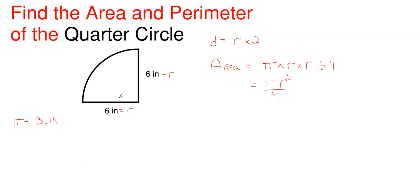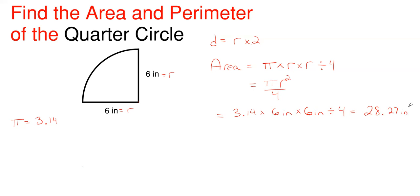Since this quarter circle has a radius of six inches, we plug into our area formula: 3.14 times 6 inches times 6 inches, divided by four. This gives us a total area of 28.27 inches squared. Whenever you have a squared unit — in this case inches squared — that always denotes area.